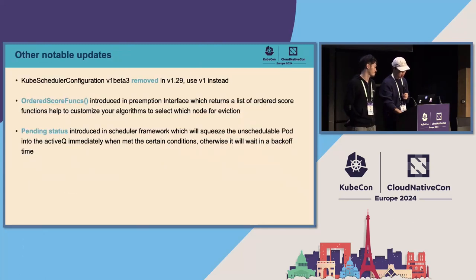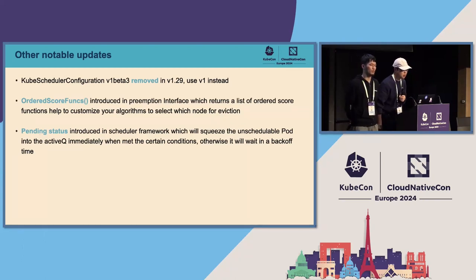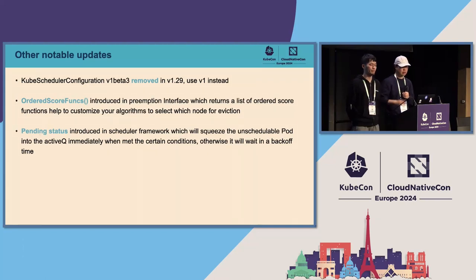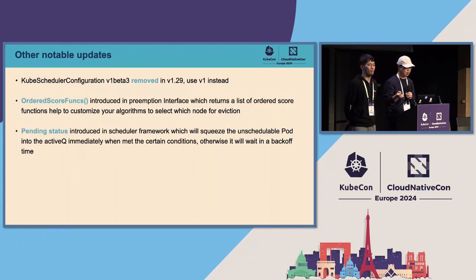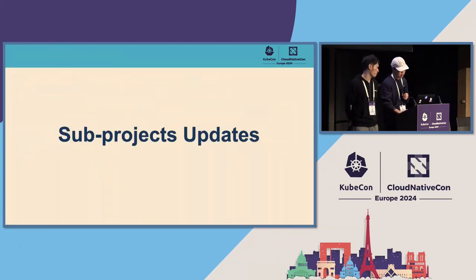One other notable update: the kube-scheduler configuration has been pretty stable over the years. In the upcoming 1.30 release, we now have just a single supported version, which is v1. The old ones like v1beta3 were all removed in 1.29.